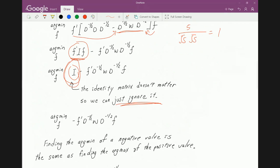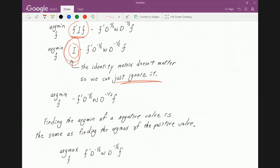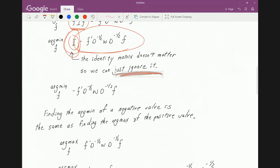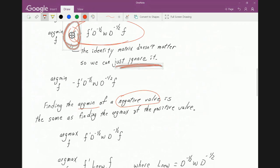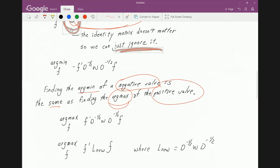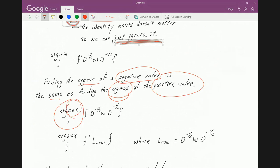So, once we ignore it, the new problem looks like this, where the argument is equal to just the negative portion of this. Of course, if you're finding the minimum of a negative value, that is the same as finding the maximum of the positive value. So, we can get rid of this negative value here by converting it to a maximum problem. And that's it.